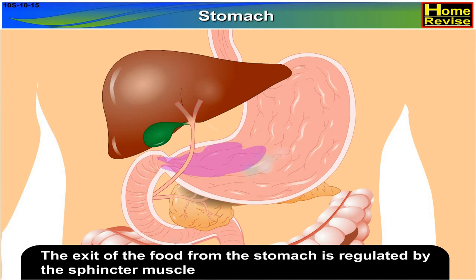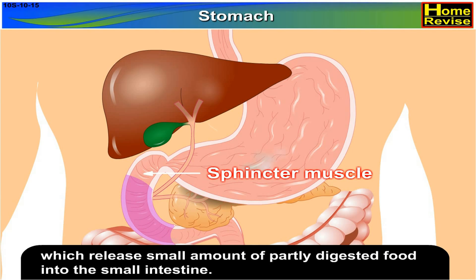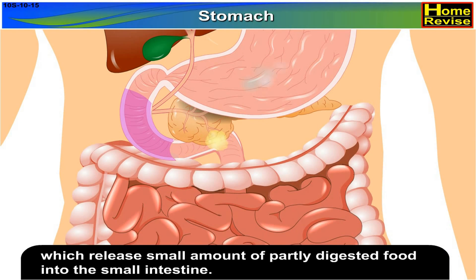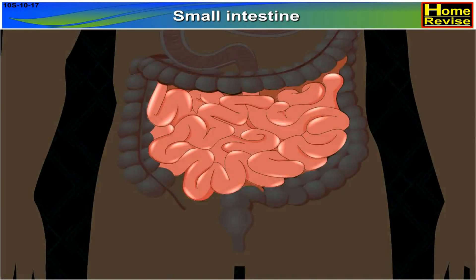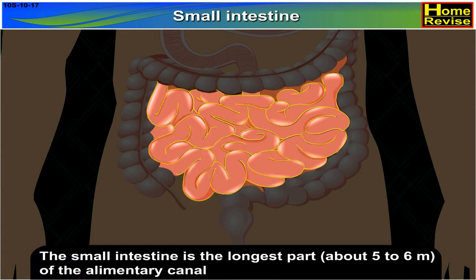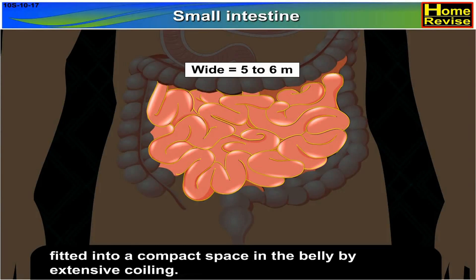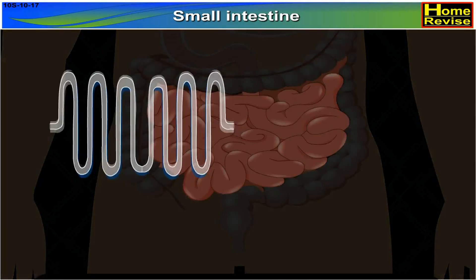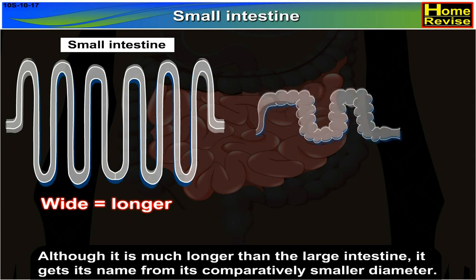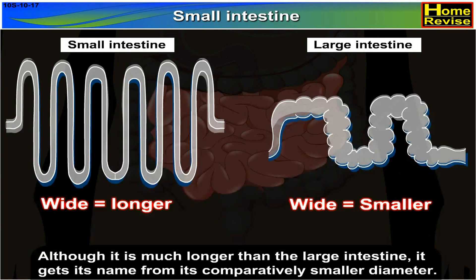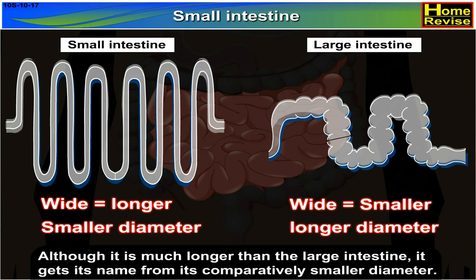The muscular walls of the stomach churn the food and help in proper mixing of food with gastric juices. The exit of food from the stomach is regulated by the sphincter muscle, which releases small amounts of partly digested food into the small intestine. The small intestine is the longest part — about five to six meters — of the alimentary canal, fitted into a compact space in the belly by extensive coiling. Although much longer than the large intestine, it gets its name from its comparatively smaller diameter.